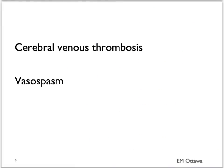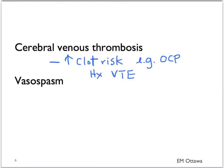For cerebral venous thrombosis, we need to ask whether the patient is at any increased risk of clotting — whether they are on medications such as oral contraceptive pills, or if there is any history of venous thrombosis. For patients with vasospasm leading to migraine, a history of migraine should be elicited. We need to know if this episode is similar to their previous migraine, if they have an aura or warning prior to their migraine, what it is composed of, and whether it is similar to their previous aura.